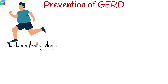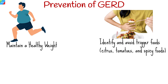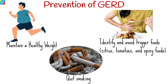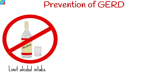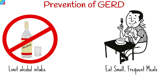Several strategies can help prevent or manage GERD. Maintain a healthy weight, as obesity is a significant risk factor. Identify and avoid trigger foods such as citrus, tomatoes, and spicy foods. Quit smoking, as tobacco weakens the lower esophageal sphincter and exacerbates reflux. Limit alcohol intake, as excessive alcohol consumption can relax the lower esophageal sphincter. Eat small, frequent meals to reduce pressure on the lower esophageal sphincter by avoiding large meals.